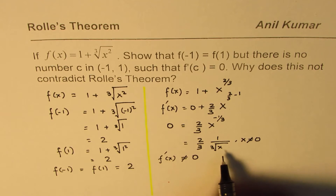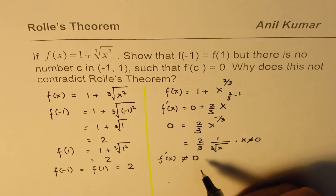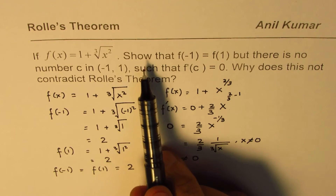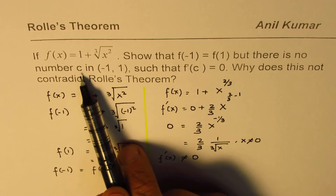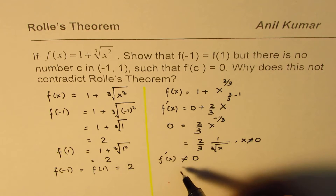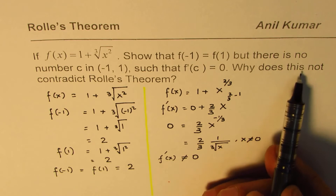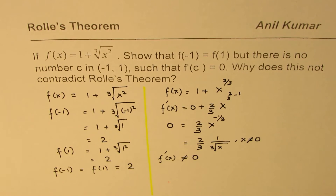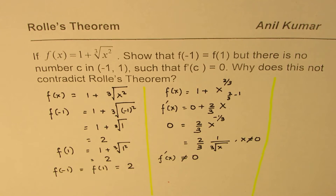Rewriting the derivative, (2/3)x^(-1/3) is the same as 2 over (3 times cube root of x). We notice that x cannot equal 0 because it is in the denominator. So f'(x) is never equal to 0 — x could be any value, but the derivative will never equal 0. So we verify there is no number in this interval where the derivative is 0.